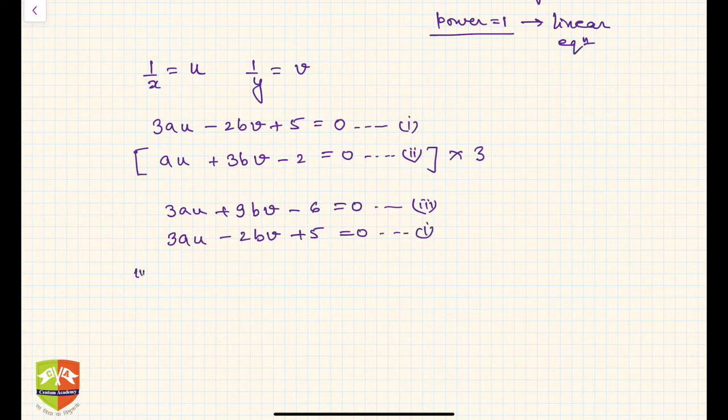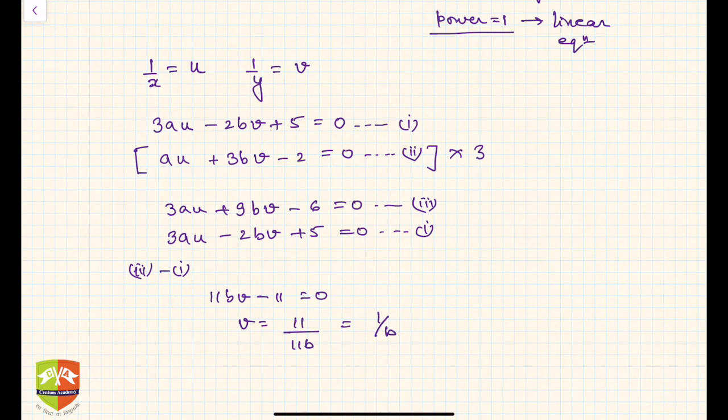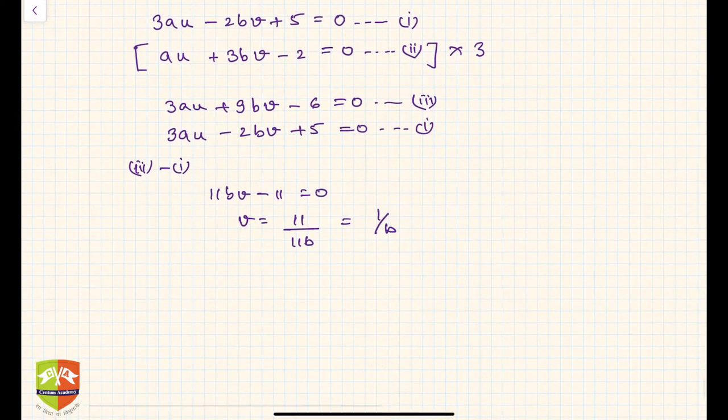Operating 3 minus 1 will give you 11bv minus 11 equals 0. So v is equal to 11 upon 11b, which is nothing but 1 upon b. This is v. So if v is known we can find out u.